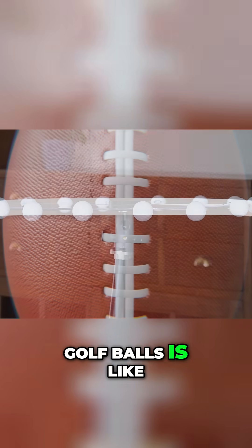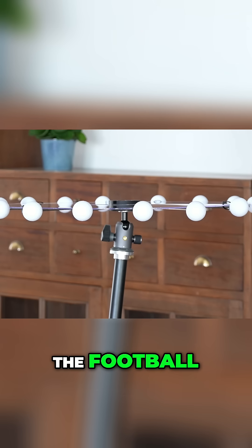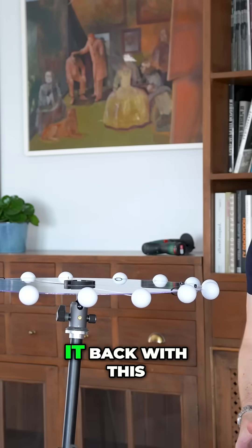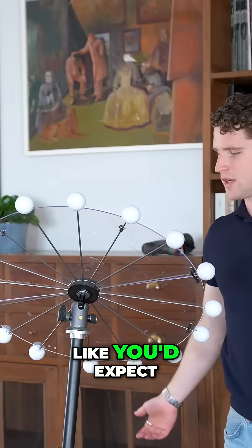Imagine this ring of golf balls is like a cross-sectional slice of the football. Here's what happens when I try and push it back with this leaf bar. It tilts back just like you'd expect.